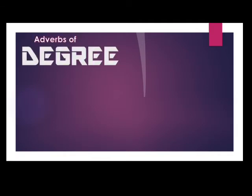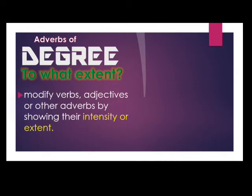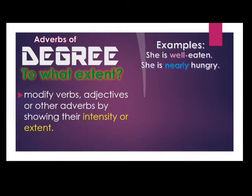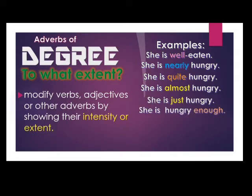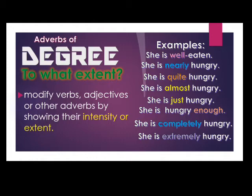The second type is the adverb of degree. It answers the question 'to what extent?' Adverbs of degree modify verbs, adjectives, and other adverbs by showing their intensity or extent. For example: 'She is well-fed.' 'She is nearly hungry.' 'She is quite hungry.' 'She is almost hungry.' 'She is just hungry.' 'She is hungry enough.' 'She is completely hungry.' 'She is extremely hungry.' As you notice, these sentences share the same idea but differ according to the degree of hunger — from well-fed to extremely hungry. That's how adverbs of degree work.